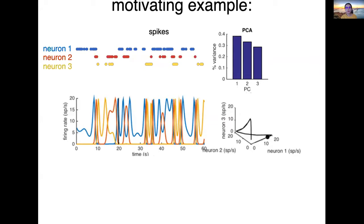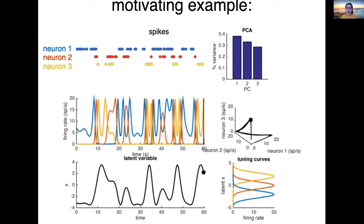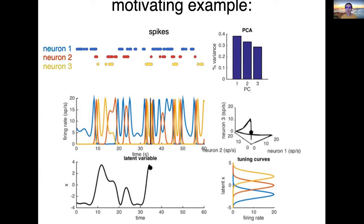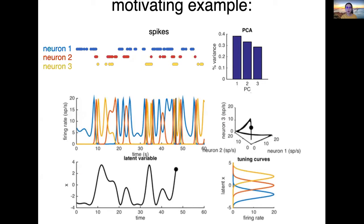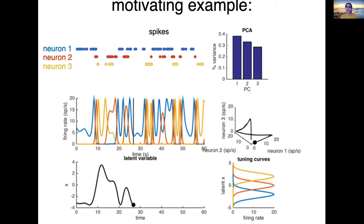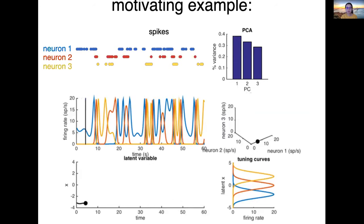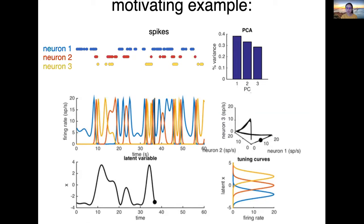The way these firing rate data were generated is from a one-dimensional latent variable X. You can think of this as an animal's position on a one-dimensional linear track, and each neuron has a Gaussian bump-shaped tuning curve. As X moves along the track, we look up the firing rate of each neuron, determining the point in 3D rate space. Using PCA you find three effective dimensions, but there exists a one-dimensional trajectory generating these spikes, which is unobservable. We resort to nonlinear dimensionality reduction to discover such latent structure from spike data.